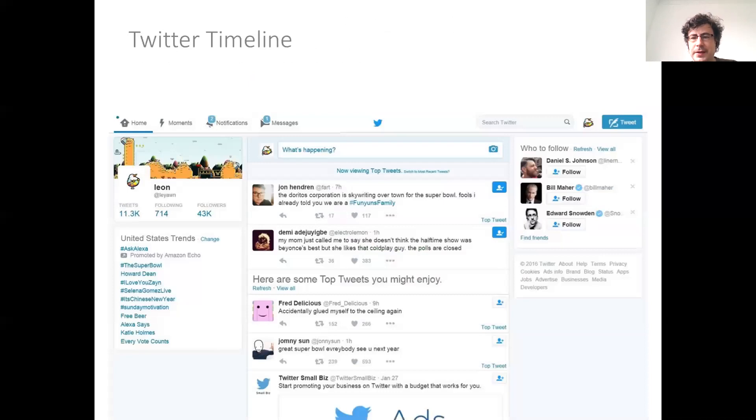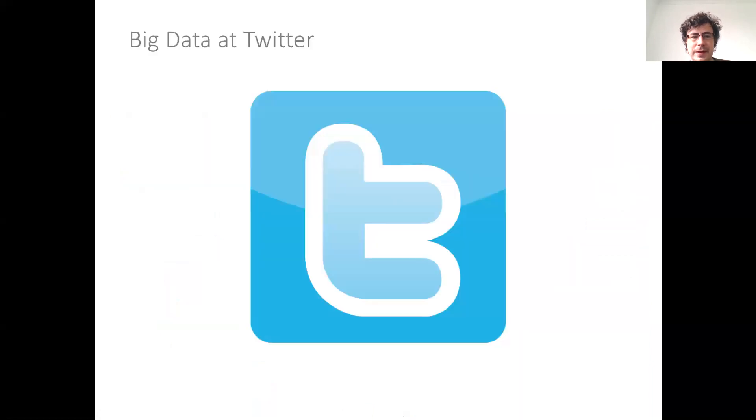He gave a talk called Twitter Timelines at Scale, talking about how they managed to scale Twitter around that time. So what is the timeline in Twitter? For those of you who don't know Twitter, this is maybe an older view of Twitter, but essentially you log in as a user and you get a list of the tweets of people you follow and tweets that might be of interest to you. Somehow you're subscribed to all of these tweeters, and it gives you all the tweets for those subscriptions in your timeline.